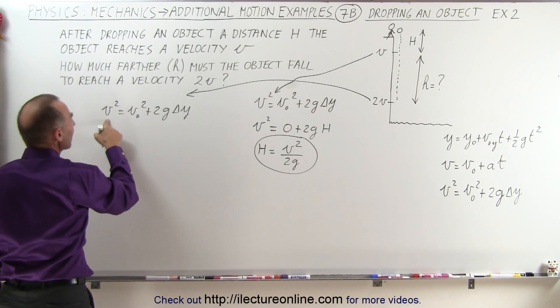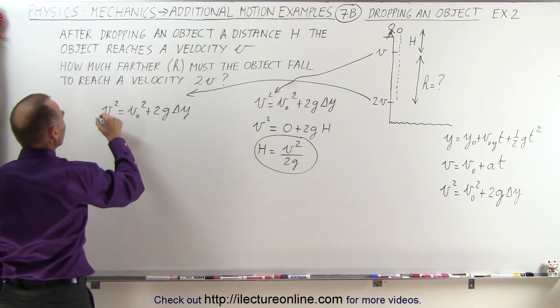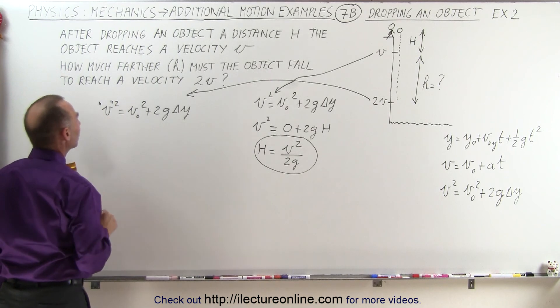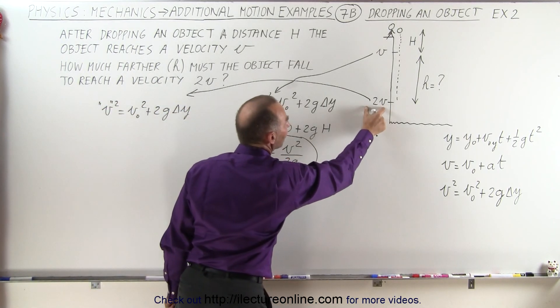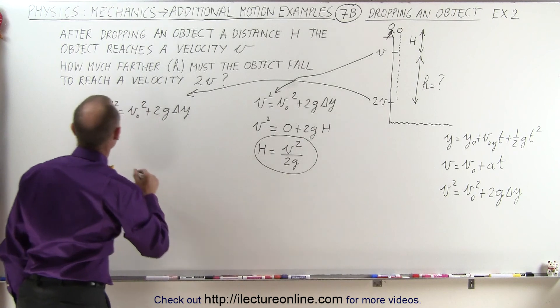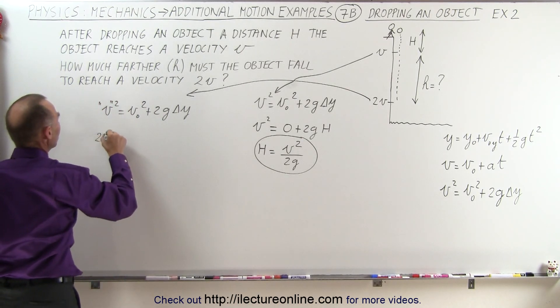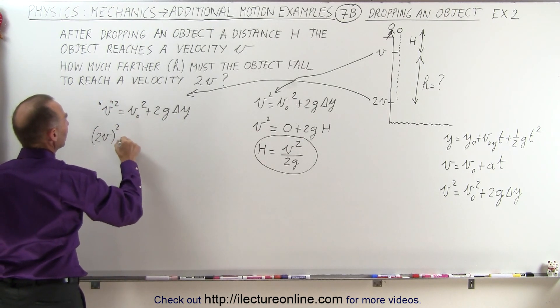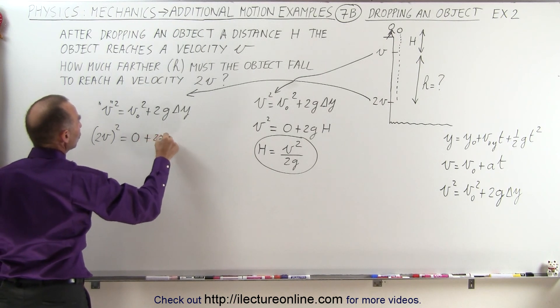So v now, the final velocity here, and of course I'll put that between parentheses here, because that's really 2 times the velocity that we had before. So in this case we're going to write this as 2v quantity squared is equal to zero plus 2g,